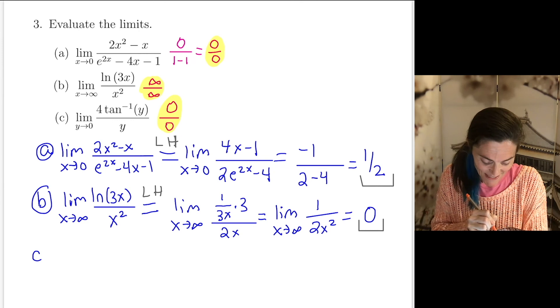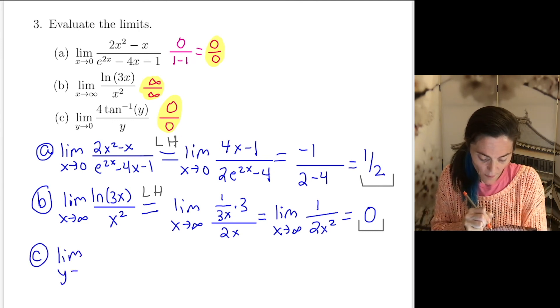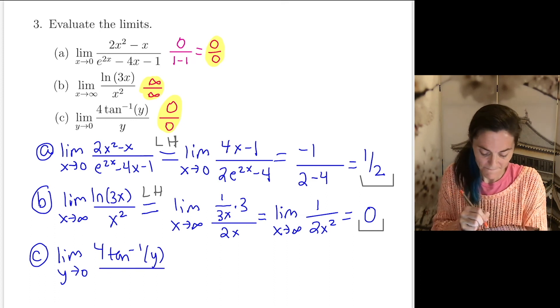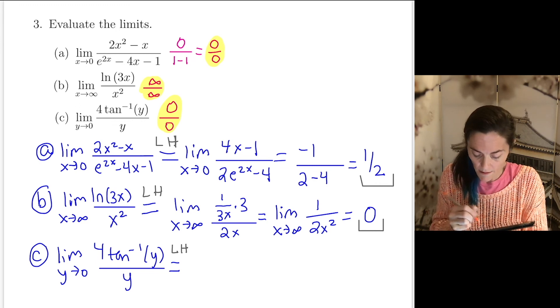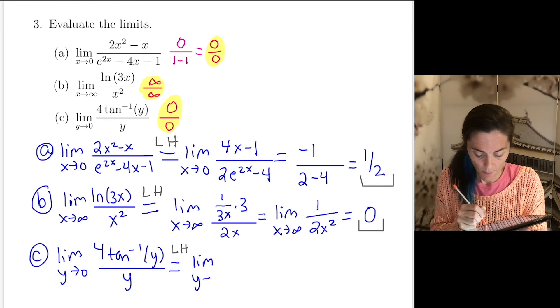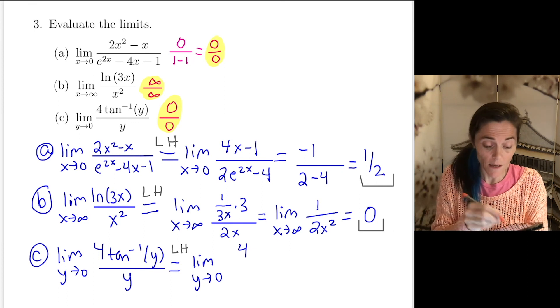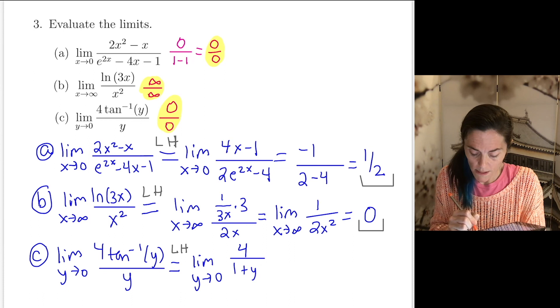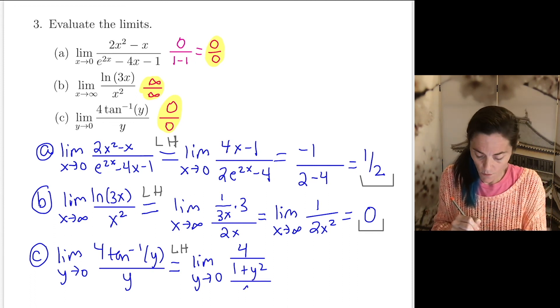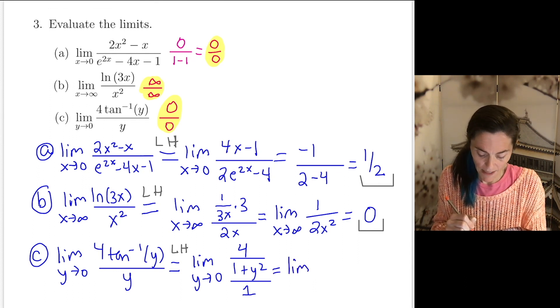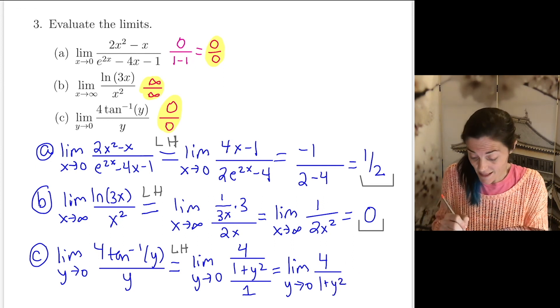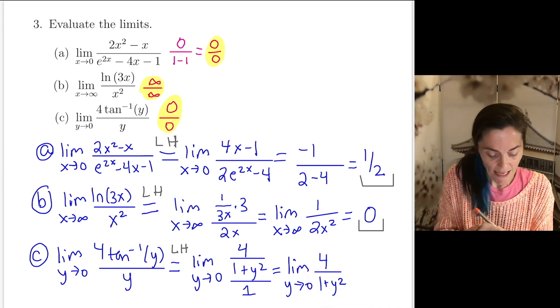We have one more limit, which is letter C. This would be the limit as y approaches 0 of 4 times the tan inverse of y divided by y. This is where I am using L'Hopital. Take the derivative on the top, take the derivative on the bottom, and reevaluate the limit. So we have the limit as y approaches 0. Well, we have 4, that's my constant. And then the derivative of tan inverse is 1 over 1 plus y squared. So far, I have the derivative of my numerator, and the derivative of the denominator is just 1 divided by 1. And maybe I can make this slightly nicer. I'll just write it as 4 over 1 plus y squared. But you see, this is continuous at 0, and so I can just evaluate. And you see the limit is 4.